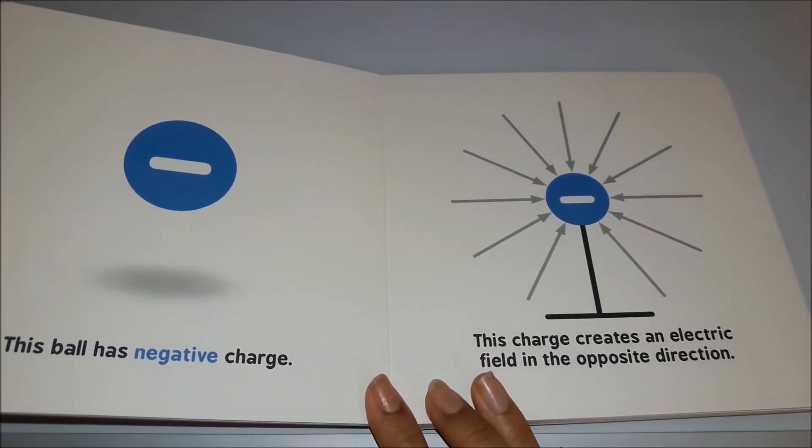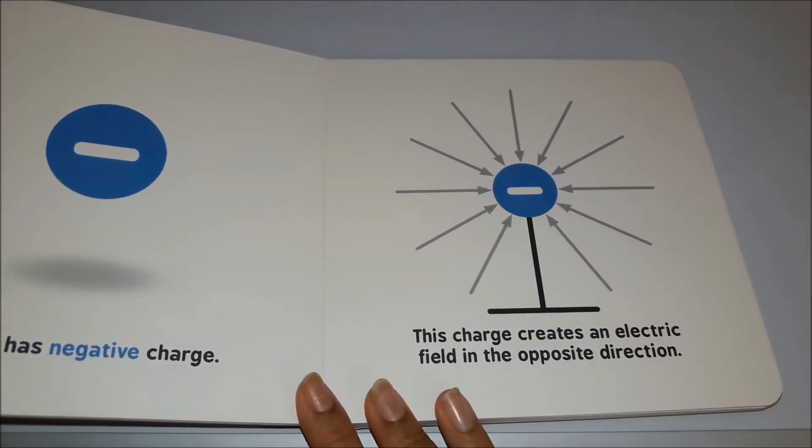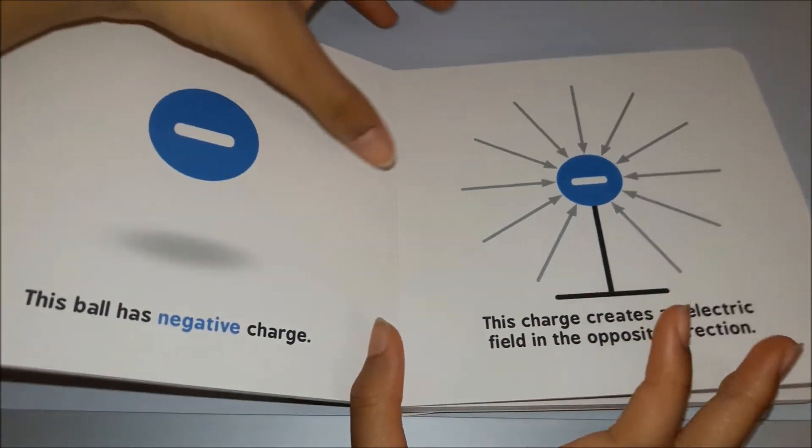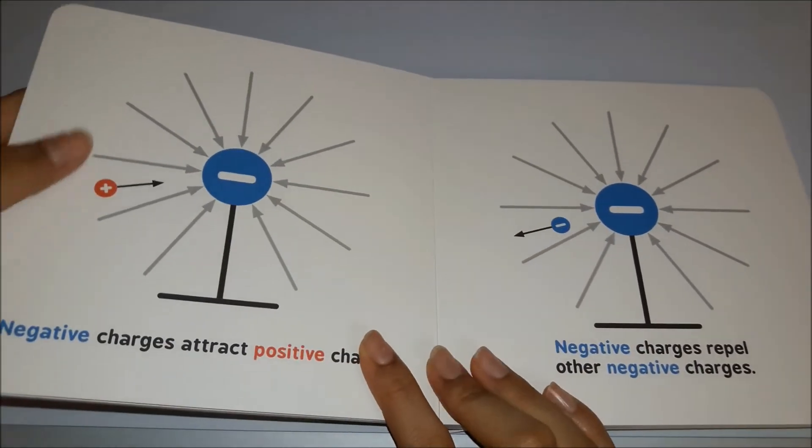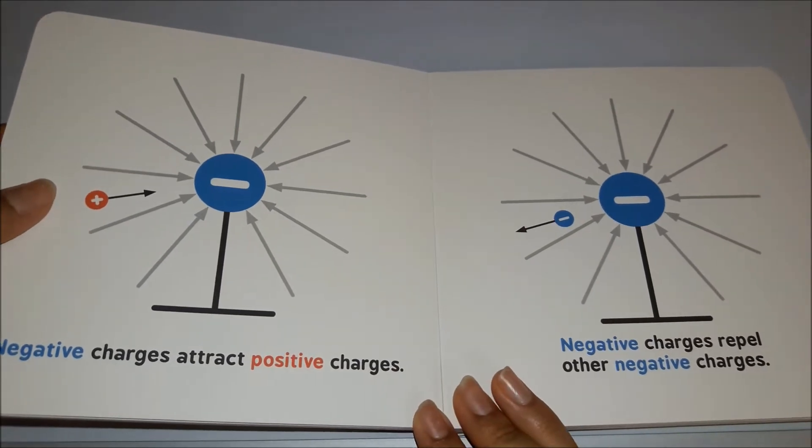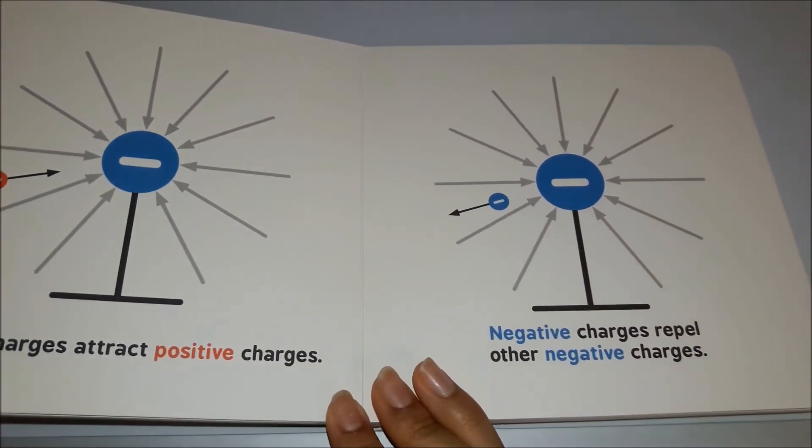This charge creates an electric field in the opposite direction. Negative charges attract positive charges. Negative charges repel other negative charges.